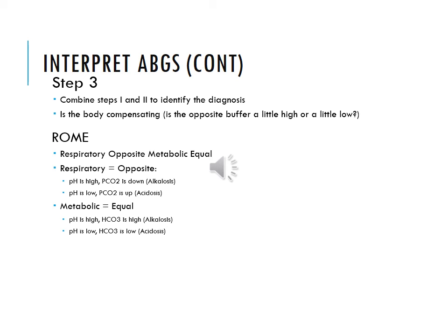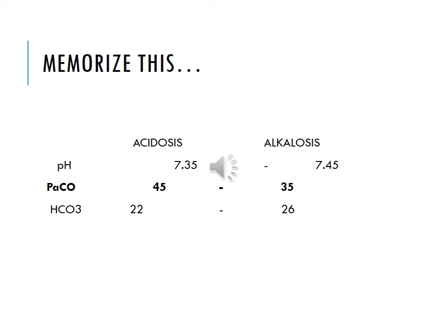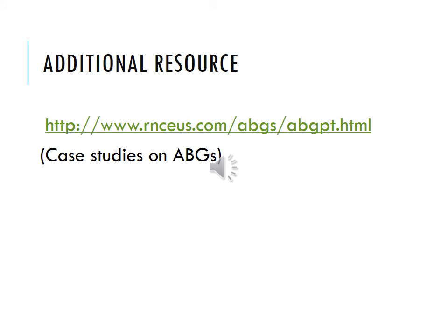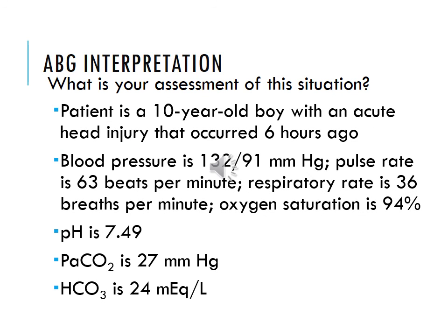We'll go over more in class. Make sure you memorize your normal pH, PaO2, CO2, and bicarbonate values, and where acidosis and alkalosis lie. Here's some more information you can look at, and we'll also be looking at something in class. The next few slides include some ABG interpretations — you can do them if you want to see if you come up with the same answers.